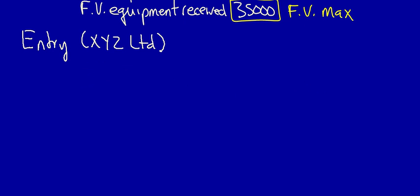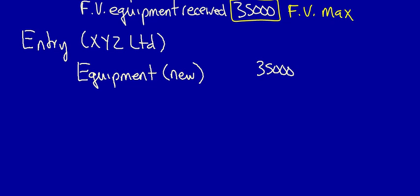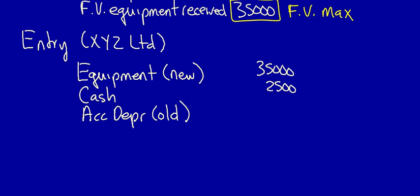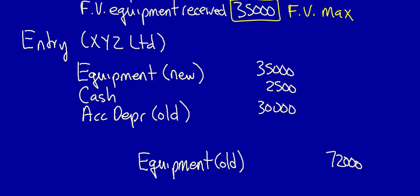Let's do the entry. First, recognize the new equipment at the fair value maximum: $35,000. Recognize that we received cash: $2,500. Get rid of the old accumulated depreciation: $30,000, direct from the chart. Get rid of the old equipment: $72,000. This entry doesn't balance, so I have to record a loss on disposal. I know it's a loss because, one, the fair value maximum was hit, and two, for non-commercial substance transactions, the fair value maximum will only cause a loss. A gain can only ever be recorded with commercial substance, and we are doing without. The loss is $4,500.